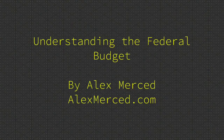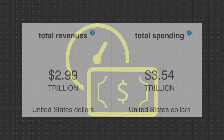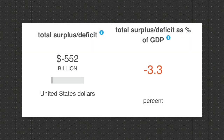Understanding the federal budget, by Alex Merced of alexmerced.com. The federal budget is the amount of money the federal government spends each year on everything. In the year 2016, the federal government spent three point five four trillion dollars, while only receiving in revenue two point nine nine trillion dollars.